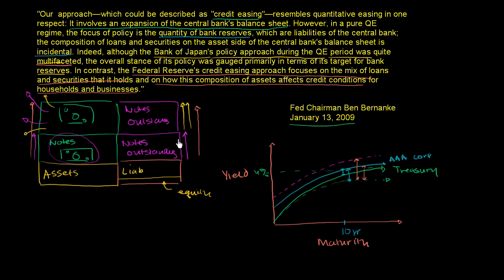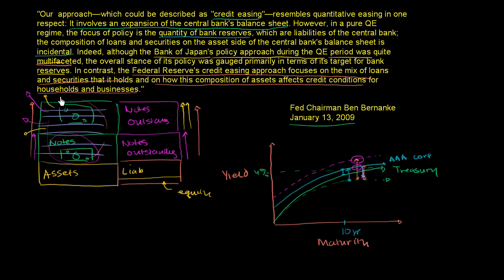So what Ben Bernanke is saying is: look, we are doing quantitative easing — we are printing money and using that money to go buy things in the economy, increasing the amount of cash in the economy. But our point isn't just to increase the amount of reserves or cash, because it's really not changing the behavior of banks. What we are going to do is go buy things like highly rated mortgage-backed securities, or commercial paper, or AAA corporate debt, so that the interest on those things goes down. Obviously, if someone's willing to pay more for a certain amount of debt, then the interest rates on it will go down. So Bernanke cares more about what ends up on the asset side of the Fed's balance sheet — it takes the dollars it prints and buys mortgage-backed securities, AAA corporate debt, and longer-term treasury securities.